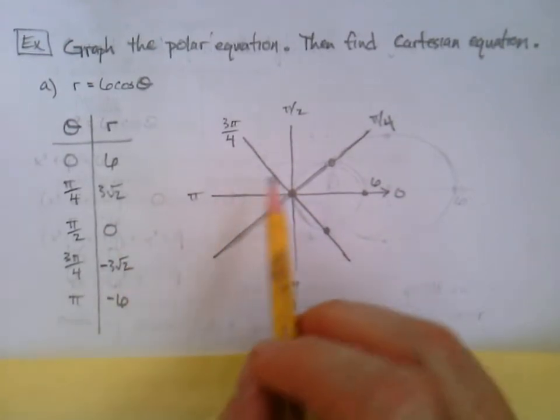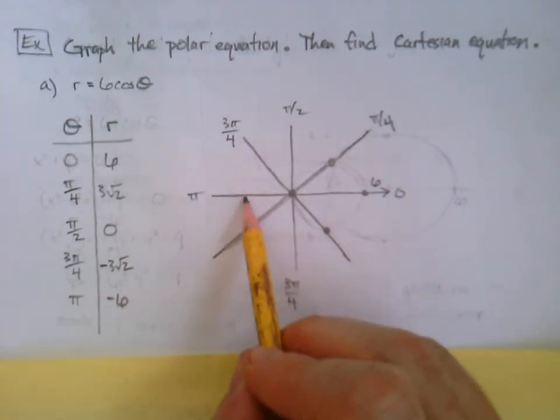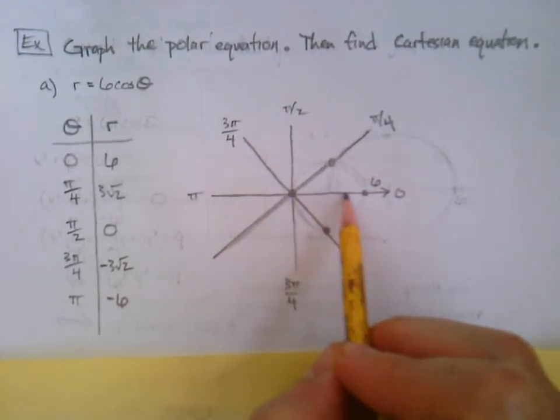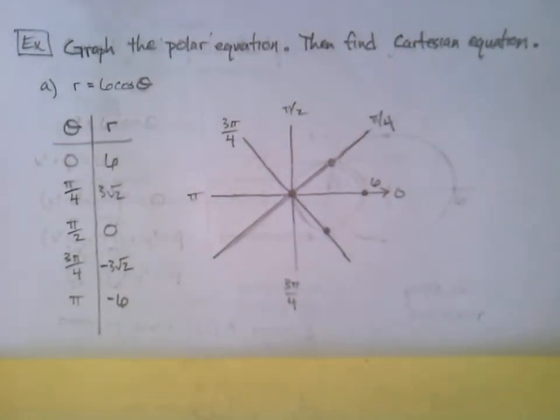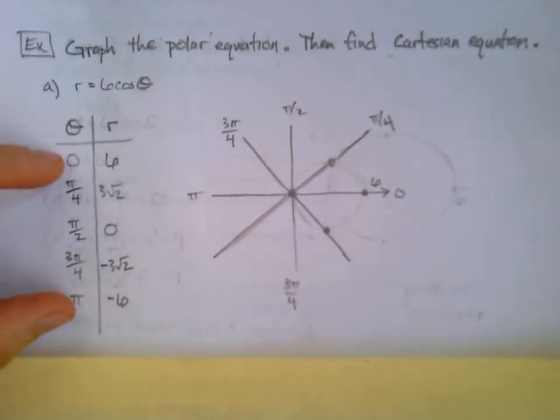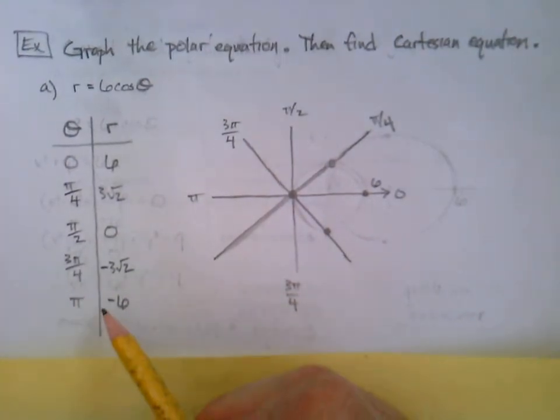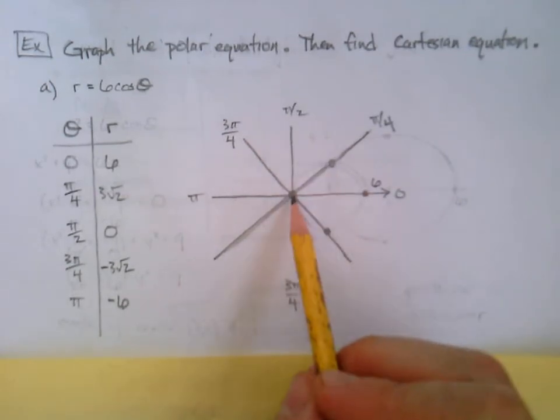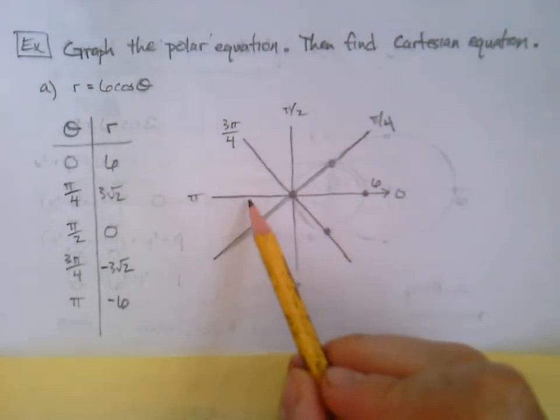Then I get to pi. I'm only halfway around but I have another negative radius. So I'm looking at pi but I'm gonna walk backwards six and I'm gonna end up right there. So although it doesn't look the same, the first and the last are actually the same location.